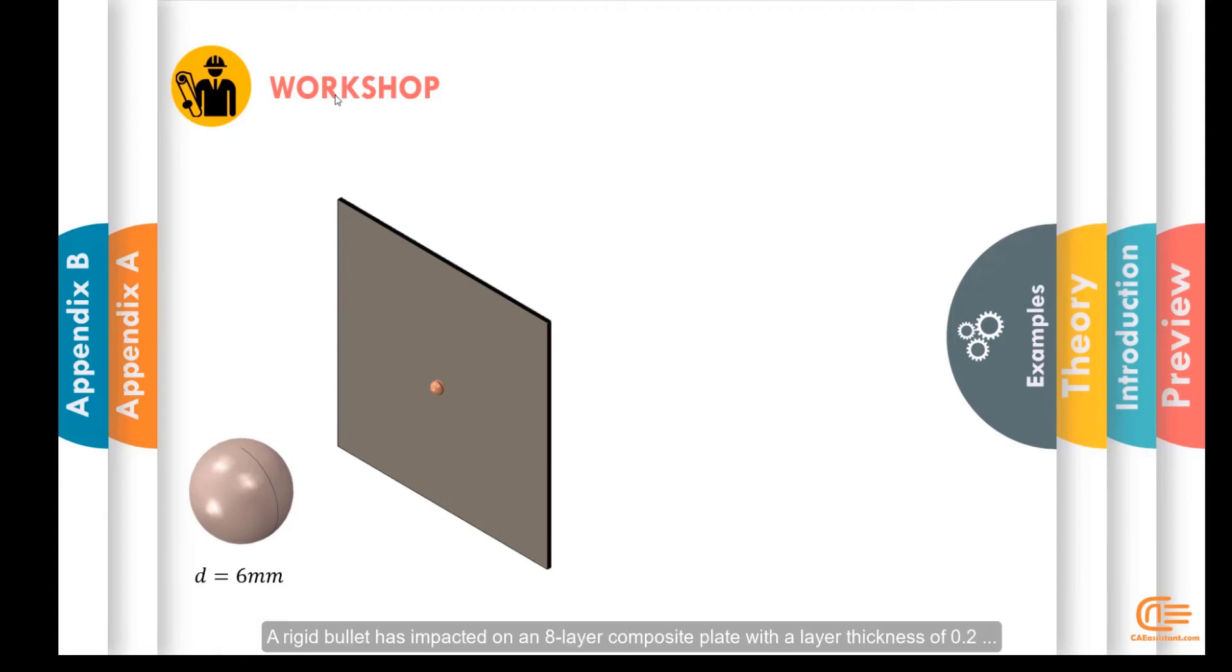A rigid bullet has impacted on an 8-layer composite plate with a layer thickness of 0.2.